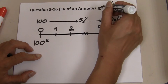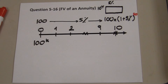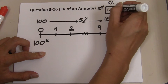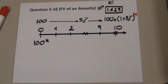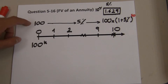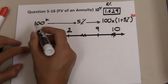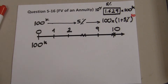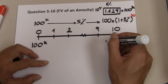The number in that cell is 1.629. That is the future value factor for one dollar today, 10 years from now at 5%. The value of the house is $100,000, so you simply take $100,000 multiplied by 1.629.